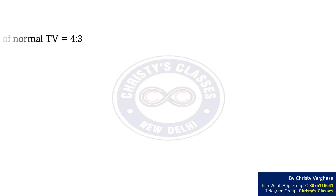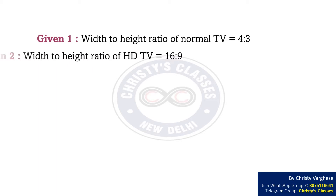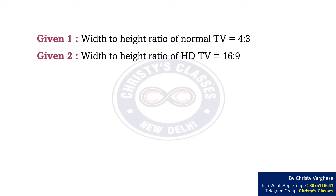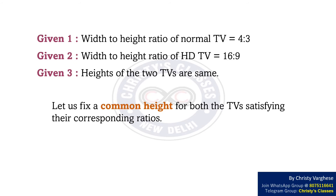It is given that the width to height ratio of the normal TV is equal to 4 is to 3, and the width to height ratio of the high definition TV is equal to 16 is to 9. Also, the heights of the two TVs are the same. Let us fix a common height for both TVs satisfying their corresponding ratios.